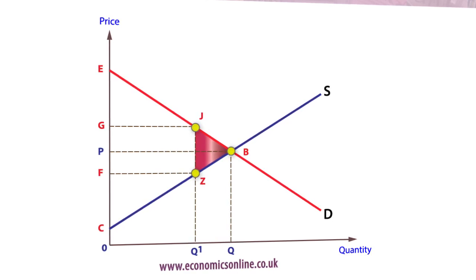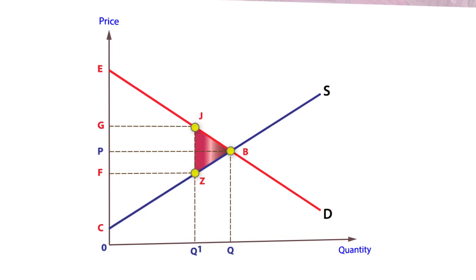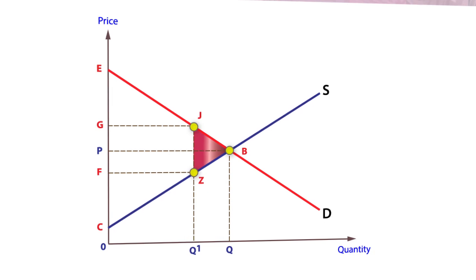Similarly, if the price is set too low, at F, the welfare loss is also the area J, B, and Z. Hence, maximum and minimum prices can lead to a welfare loss.